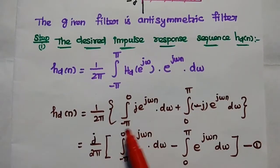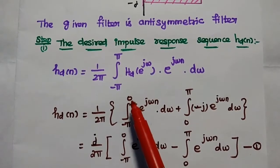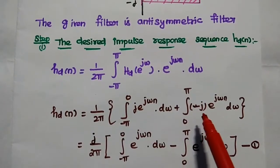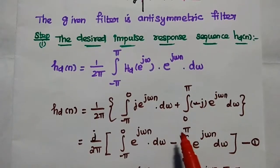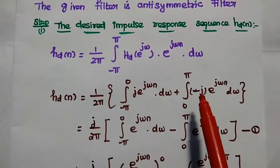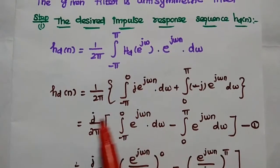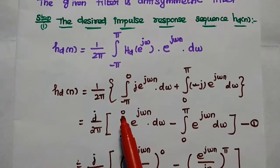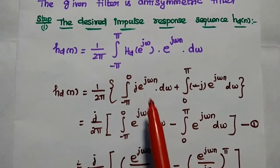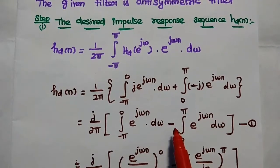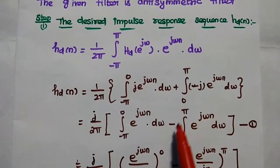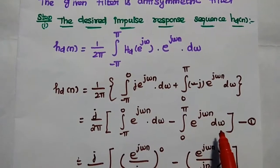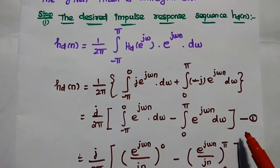The limit is changed: from minus pi to 0, the value is plus j, and from 0 to pi, the value is minus j. We can take j as a common term, giving us j over 2π times the integral from minus pi to 0 of e^(jωn) dω, minus the integral from 0 to pi of e^(jωn) dω. Consider this as the first equation, which we will use later.